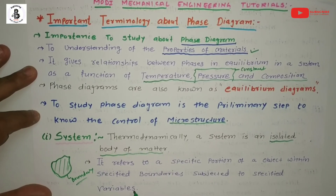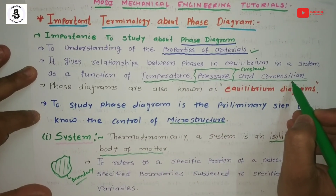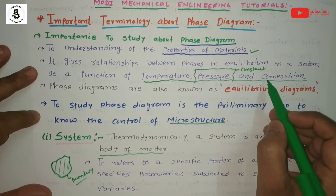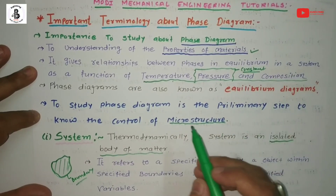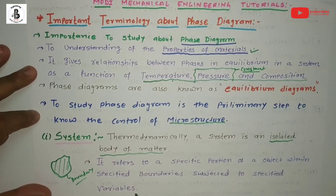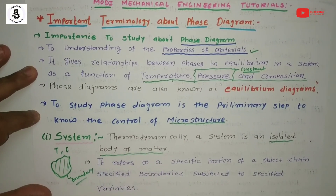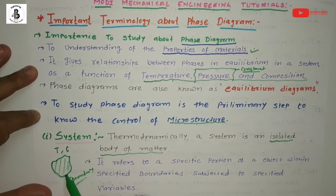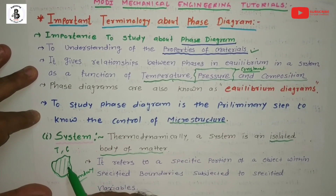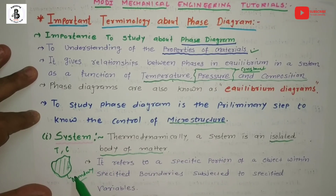In the case of phase diagrams, the main three variables are temperature, pressure, and composition. However, since each phase transformation or phase diagram always occurs at constant pressure, mainly two variables apply: temperature and composition. At different temperatures and compositions, systems have different kinds of behaviors. A system is considered an isolated body of matter that differs from another system and has different kinds of properties.